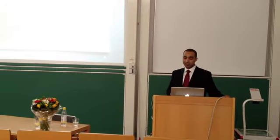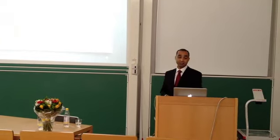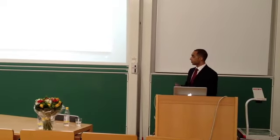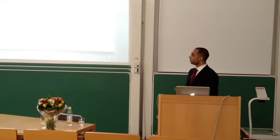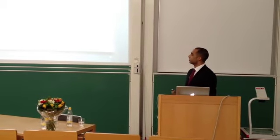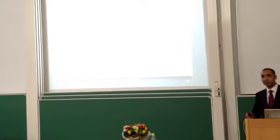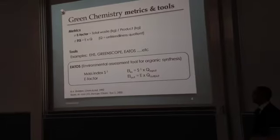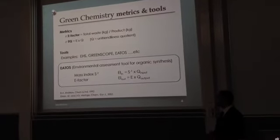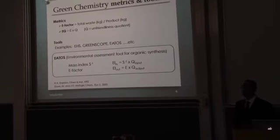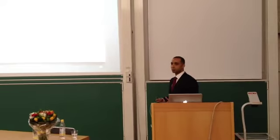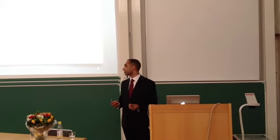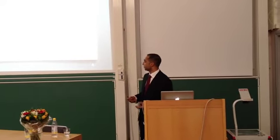For developing green chemistry, efficient metrics and tools are needed. Professor Sheldon has introduced the concept of the E-factor ratio, a green metric that measures the waste produced per kilogram of product. To make the E-factor more descriptive, a quotient or environmental quotient is linked to the E-factor, which describes how hazardous the waste is. Some tools were already reported in the literature to assess the greenness of a reaction, for example EHS, GREENSCOPE, and ERTIS.